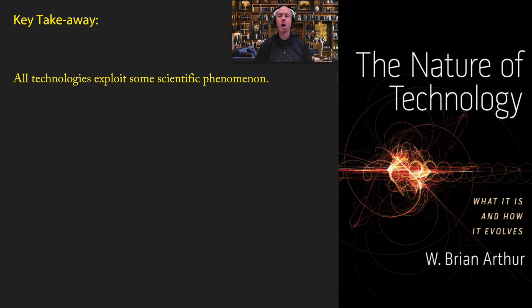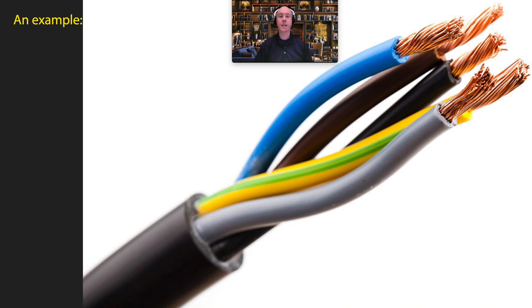A few key takeaways from this book: all technologies exploit some kind of scientific phenomena. Technology is programming natural phenomena for a human purpose. For example, the electric wire sounds very simple, but it brings together many natural phenomena. Human beings did not invent electricity — electricity is in lightning — but we figured out how to control it and use the energy in a useful way. We learned that copper conducts electricity, making it great for wires, and that rubber and plastic are excellent insulating materials, helping electricity flow faster and protecting us from its dangers.